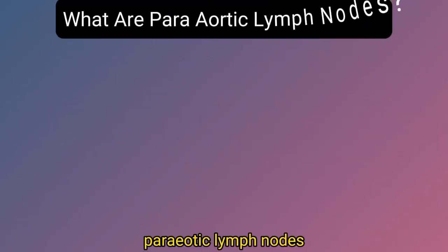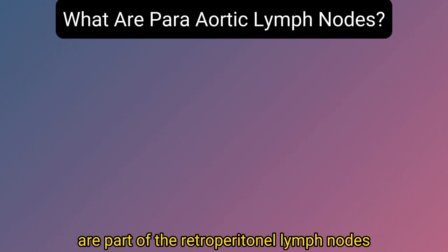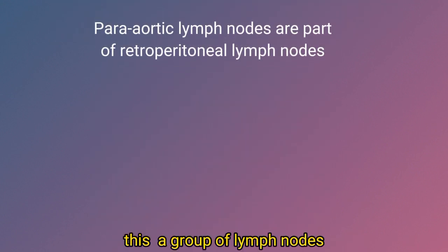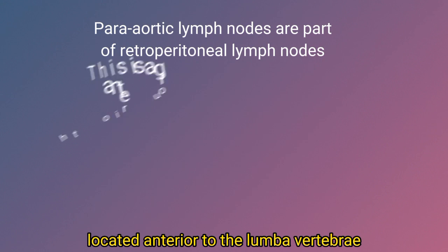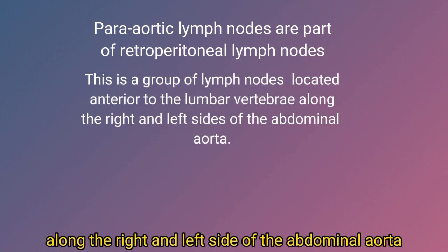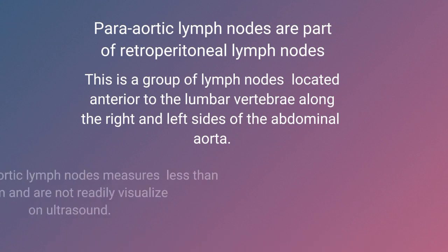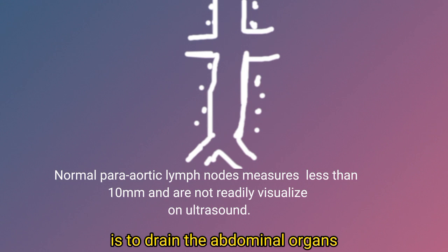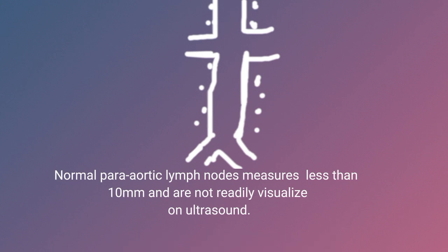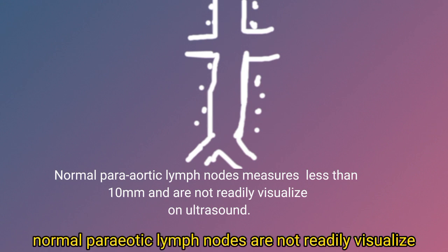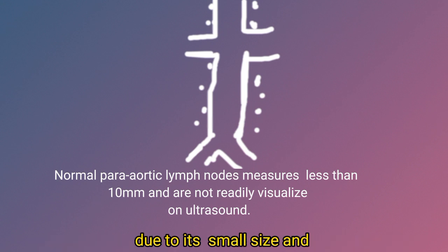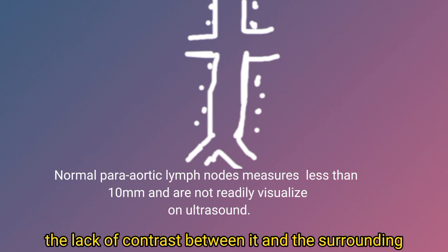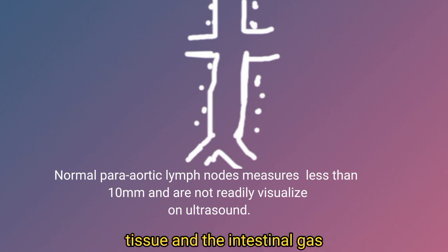Para-aortic lymph nodes are part of the retroperitoneal lymph nodes. This is a group of lymph nodes located anterior to the lumbar vertebrae, along the right and left side of the abdominal aorta. Their main function is to drain the abdominal organs and the GI tract. Normal para-aortic lymph nodes are not readily visualized on ultrasound due to their small size, the lack of contrast between them and the surrounding tissue, and intestinal gas.